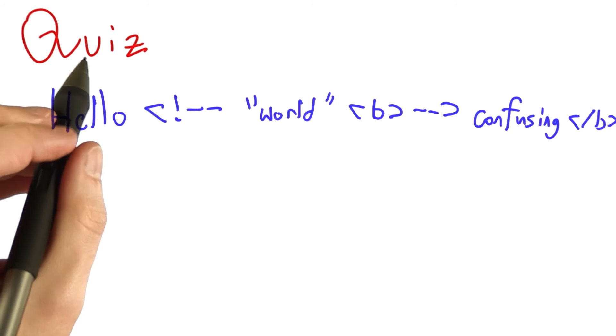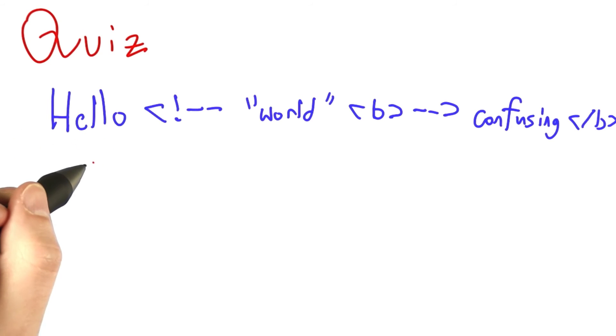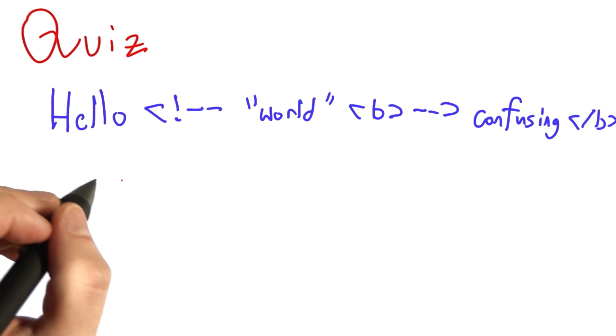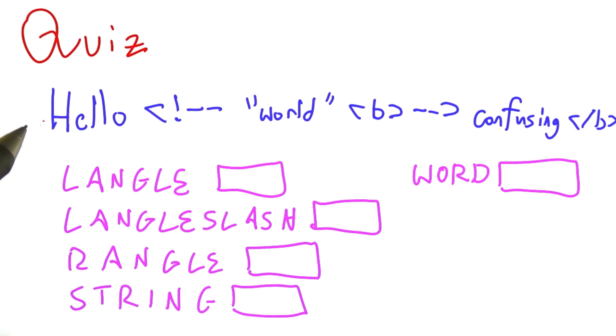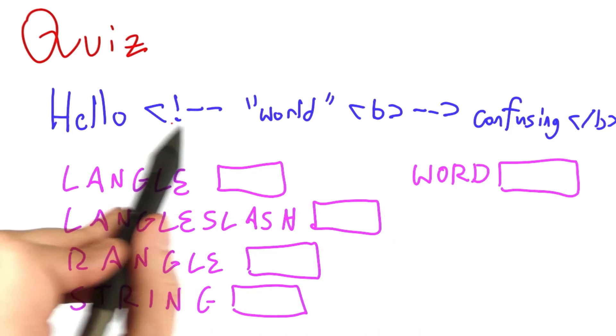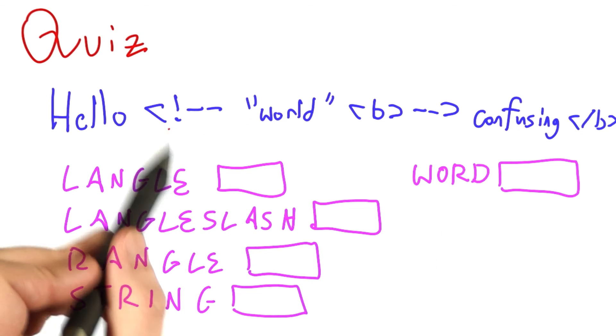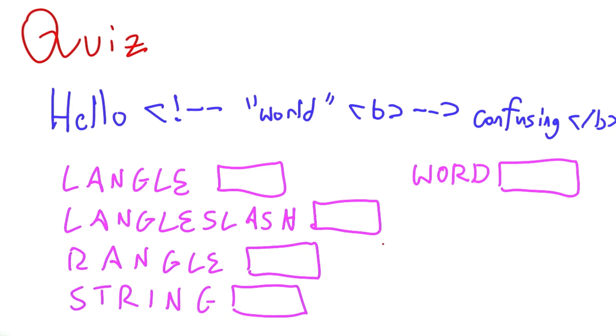And the quiz for you is, in multiple choice fashion, to tell me which of the following HTML tokens, and I'll draw them now, could be found by our Lexer. So check all that apply. Based on this string, assuming that we've added the right rules for comments to our Lexer, which of the following would be found.